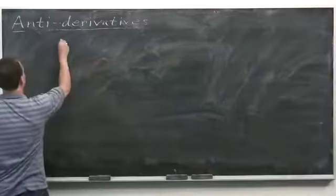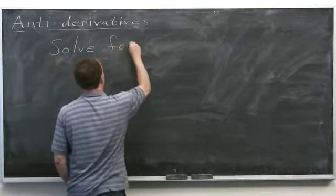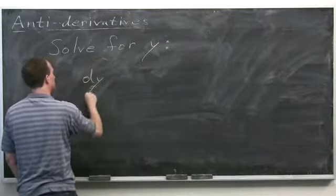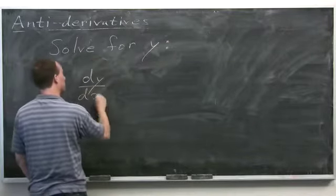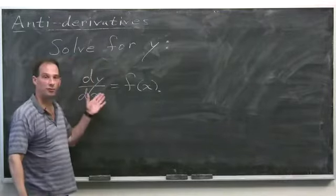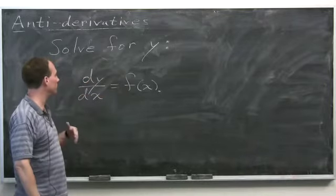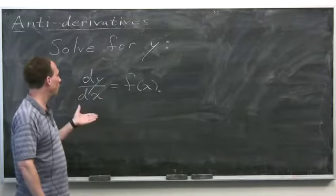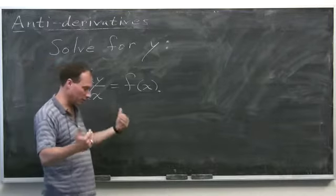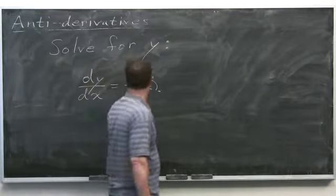We want to solve for y: dy/dx equals some given function of x. This means you need to find some function y whose derivative is the given function f(x). So you're anti-differentiating — figuring out a function whose derivative is f(x).